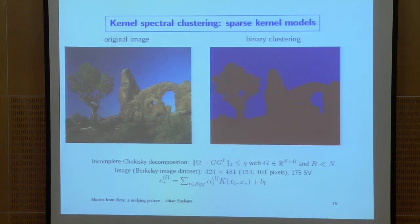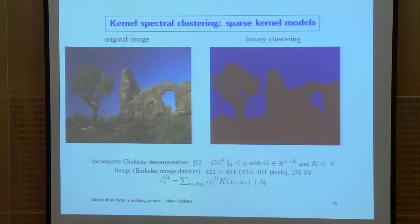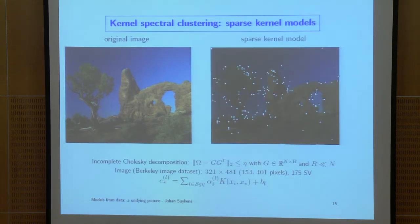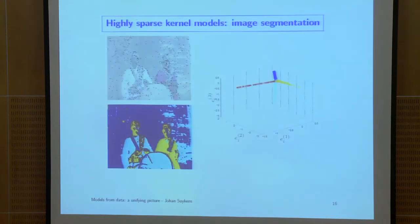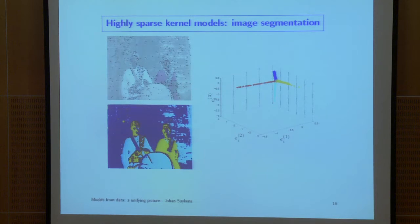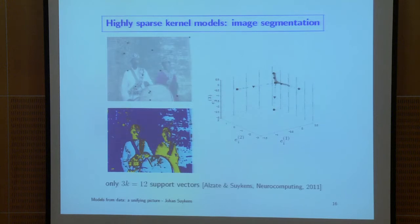This framework also enables you to sparsify the models. With a dense representation you would have more than 100,000 support vectors — one per pixel. Based on incomplete Cholesky factorization, the set of white points serves as support vectors in the model, giving a much sparser representation. We can go to very sparse representations: to achieve good segmentation you need only 12 support factors instead of 100,000.